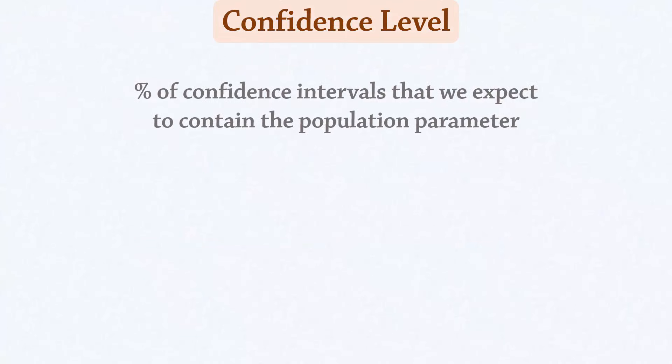The confidence level basically refers to the percent of confidence intervals from many samples that we expect to contain the true population parameter. Confidence levels of 90%, 95%, and 99% are often used, but 95% is the most commonly used confidence level.